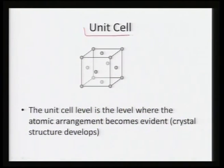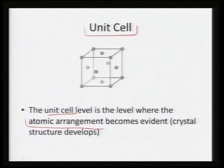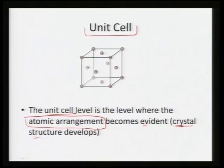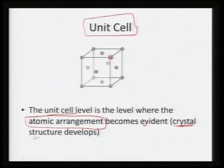At the unit cell level, many atoms come together to form a repeating unit called the unit cell for a particular crystal. For example, we have an FCC unit cell — face-centered cubic lattice — with atoms sitting at those positions. At this level we can start seeing atomic arrangement. Because of the pattern in which we associate the atoms, it becomes evident and we develop a crystal structure — going from no clear order at the atomic level to visible order at the unit cell level.